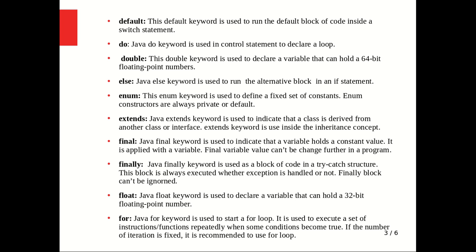The extends keyword is used to indicate that a class is derived from another class or interface — it is used in the concept of inheritance in OOP. The final keyword is used to indicate that a variable holds a constant value; once applied to a variable, the value cannot be changed further in the program.